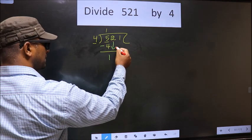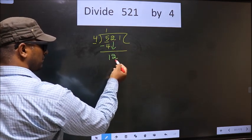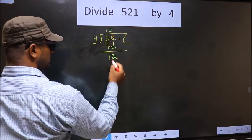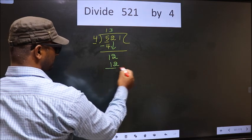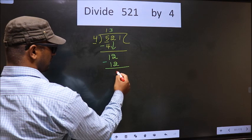Now you bring down the next number, so 2 down. Now here we have 12. When do we get 12 in the 4 table? 4 times 3 is 12. Now you subtract: 12 minus 12 equals 0.